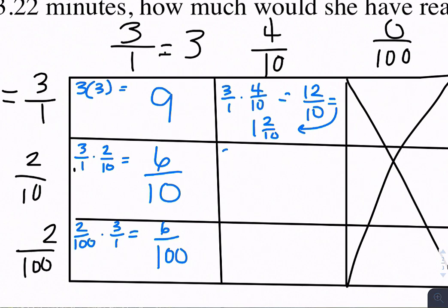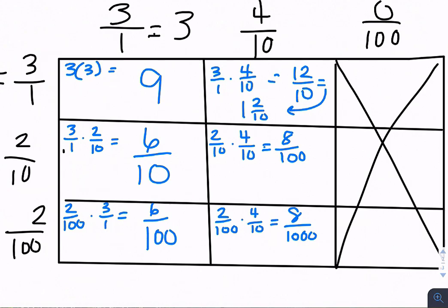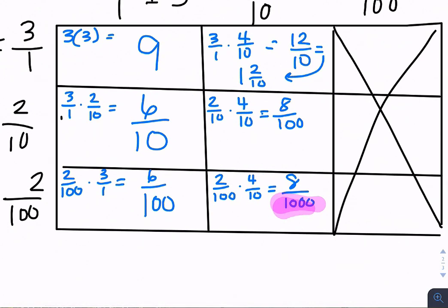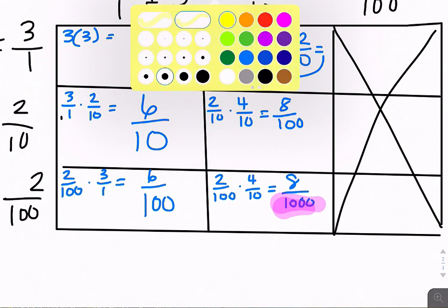Then here I have 2 tenths times 4 tenths, which is 8 over 100. And then here I have 2 over 100 times 4 over 10, and I get 8 over 1,000. This box right here always holds my common denominator.